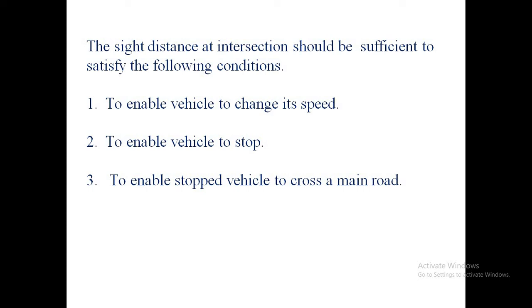The third condition is enabling a stopped vehicle to cross the main road. This is applicable when a vehicle enters the intersection from the minor road and is controlled by a stop sign. These vehicles have to stop and then proceed to cross the main road. The time T required for the stopping vehicle to cross the main road depends upon: (a) reaction time of the driver, (b) width of the main road, (c) acceleration, and (d) length of the vehicle.